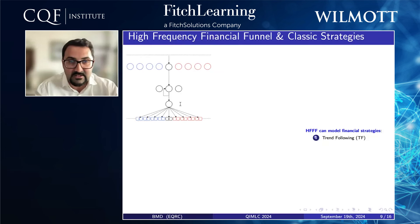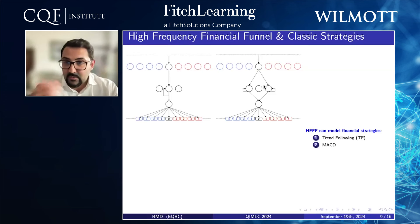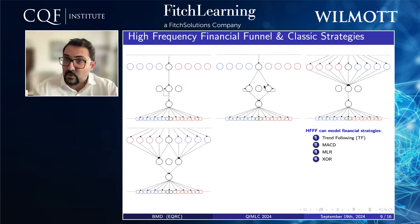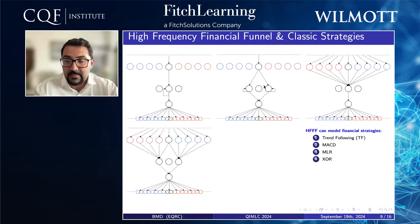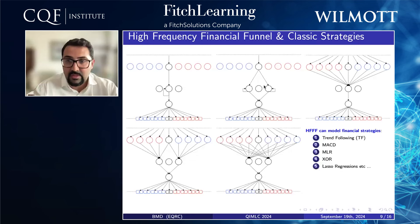You may ask: how is this shallow learning DNA capable of representing most classic financial strategies? Here we have classic financial strategies represented in high-frequency financial funnel format. Every weight equal to zero has been suppressed to make the diagram less busy. For example, one HFFF represents a trend-following strategy, another a mean-reverting strategy, another a multilinear regression, and another an XOR strategy which is quite important in high-frequency trading.